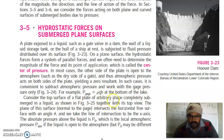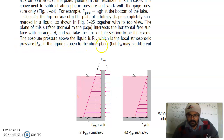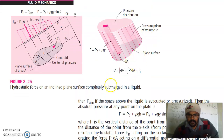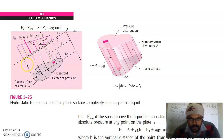Consider the top surface of a flat plate of arbitrary shape completely submerged in a liquid, as shown in the figure. You can see the hydrostatic force on a submerged surface. Atmosphere pressure can be extracted for simplicity when it acts on both sides. The absolute pressure above the liquid is P0, which is the local atmosphere pressure. If the liquid is open to the atmosphere, P0 may differ. Now take a plate submerged under the liquid; we have to find the forces on this plate due to the liquid and atmosphere.